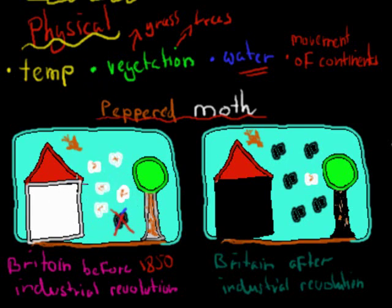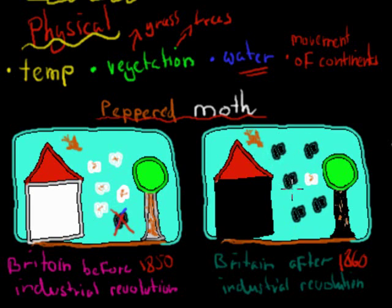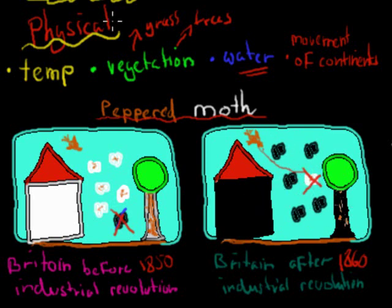But then after the Industrial Revolution — 1860 onwards — there was so much smoke and coal and dust that the cows and the trees started to turn black. Now these same moths that used to be easy to pick out — the black ones — the birds can't see them properly anymore, but they can see the white ones really easily. So the birds would now grab the white ones and eat them, and the black ones would be left over. Here you have a change in the frequency of colors, which comes about not because of chemical or competition reasons, but because of the changing environment and changing landscape. This is physical: temperature, vegetation changing, landscape changing, water availability, movement of continents.